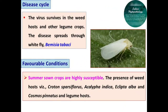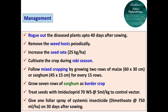This viral pathogen spreads by means of whitefly — Bemisia tabaci — which is the insect vector for transmitting this disease from infected fields to healthy fields. Predisposing factors include summer-sown crops that are susceptible to attack, and the presence of weed hosts like Croton, Eucalyptus, Cosmos, and some legume crops, which are responsible for development of this disease.